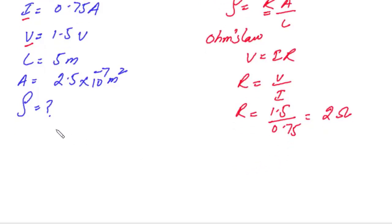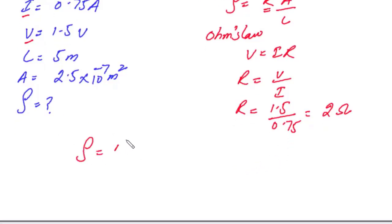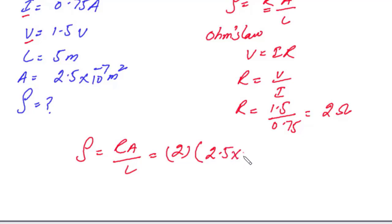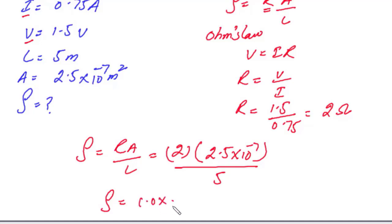Now we can find the resistivity. Resistivity equals R × A divided by L. R value is 2, A value is 2.5 × 10⁻⁷, and length is 5 meters. The resistivity comes out to 1.0 × 10⁻⁷ ohm·meter. We used Ohm's Law first to find resistance, then used resistance, area, and length to find the resistivity.